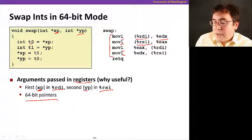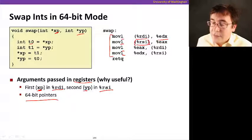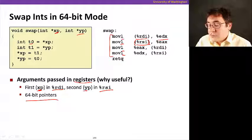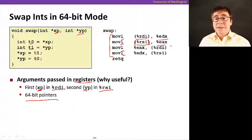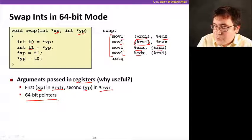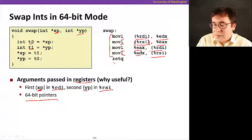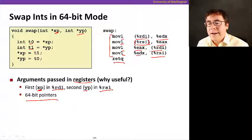We get yp, its contents, that's why we're using the parenthesis here. We're dereferencing the address. Storing it in the other temporary variable, t1, that happens to be mapped to eax. And then we're just storing the temporary variables back into the pointers. And then we return. It's much simpler.